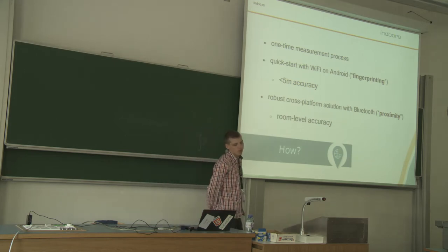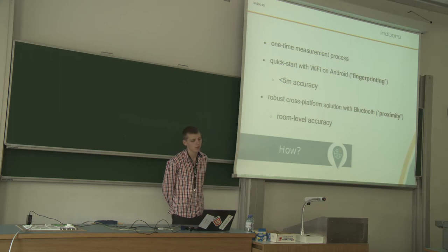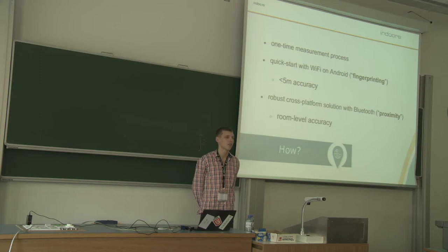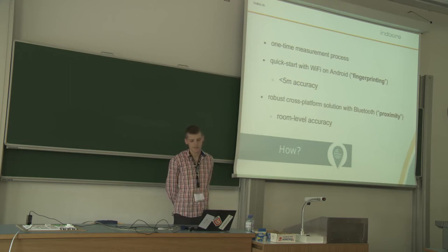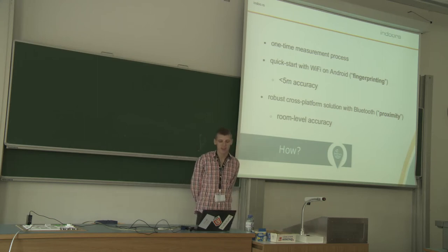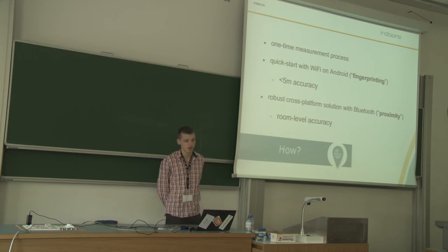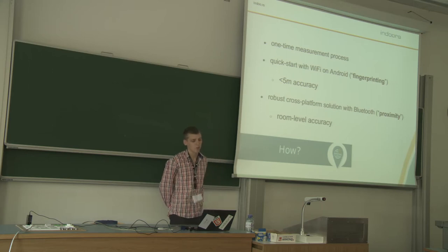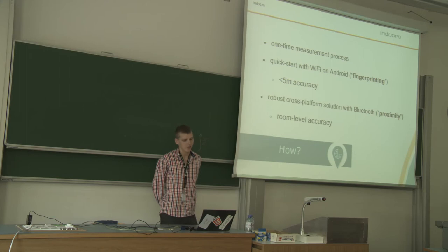How do we do this? It all starts with a one-time measurement process. You install our software on your computer and walk around your building, and we measure the signals around you. That's pretty much everything you need. There are two types of indoor localization we provide. The first one is indoor localization using Wi-Fi signals — we measure the Wi-Fi signals and their strength, and based on that we can tell you where you are. This is about five meter accuracy or better, and we call it fingerprinting.